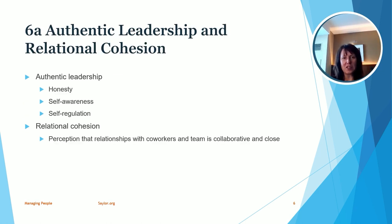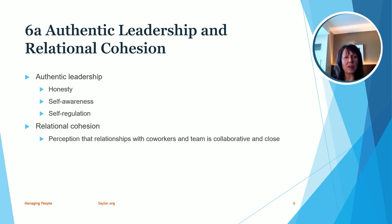Let's take a look at our first topic, which is authentic leadership and relational cohesion. Authentic leadership has characteristics of being honest, having self-awareness, and also self-regulation. Self-awareness in this context refers to the ability to understand the situation that you're in and the proper behavior and traits that should be exhibited. From an emotional intelligence perspective, self-awareness means we're aware of our own place in the world and our own personal feelings. The regulation part comes in where we're able to manage all of those things based on the situation.